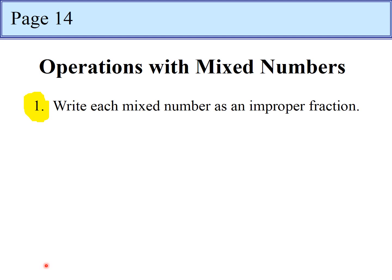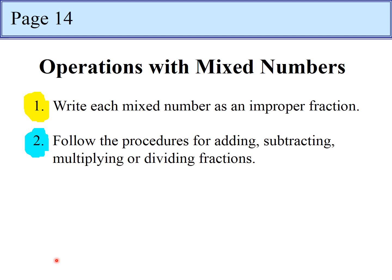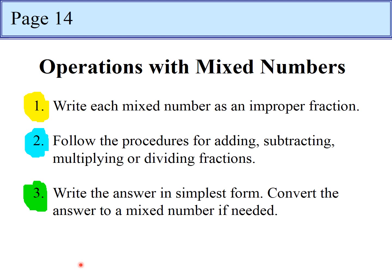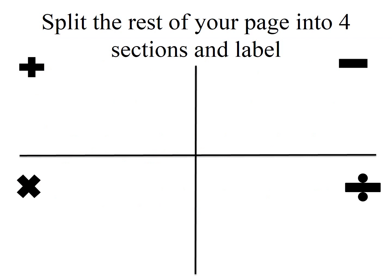Go ahead and highlight, choose a highlight color and highlight just that number one because we're going to be doing this step four different times. The next step is follow the procedures for adding, subtracting, multiplying or dividing fractions. Highlight a new color. Step number three is we're going to write the answer in simplest form and convert the answer to a mixed number if needed.